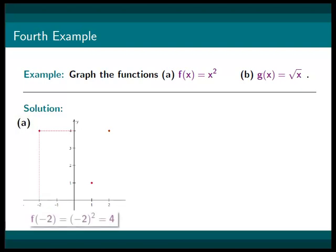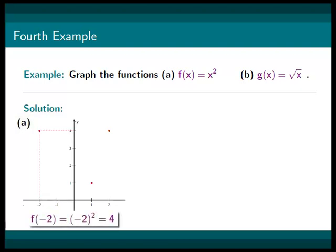Subbing in x equals negative 2, we get (-2, 4). Then, by repeating these steps with different x values, we will plot several different points.